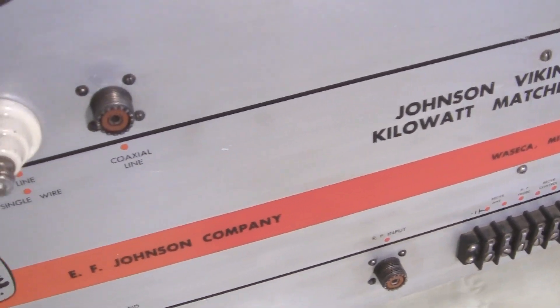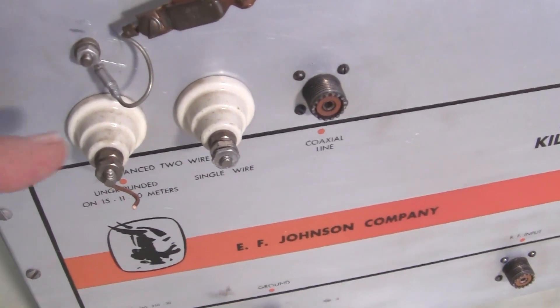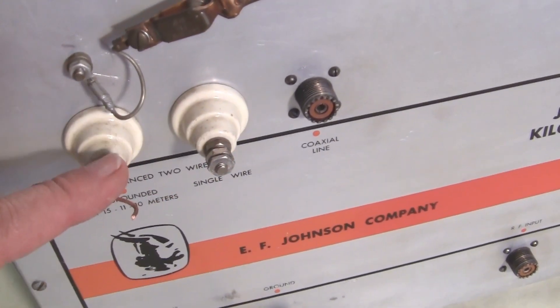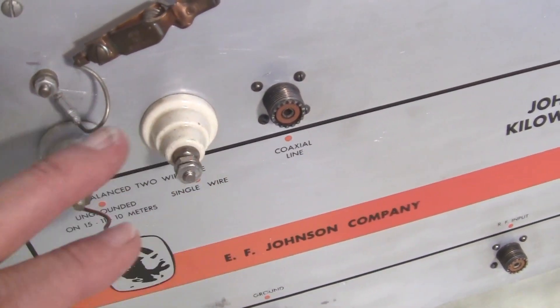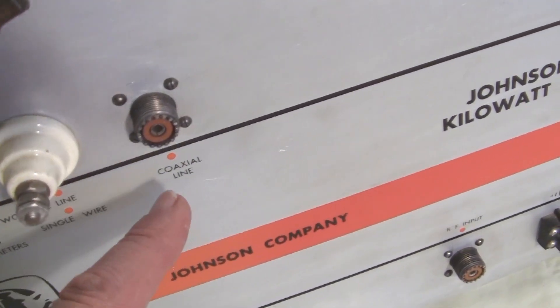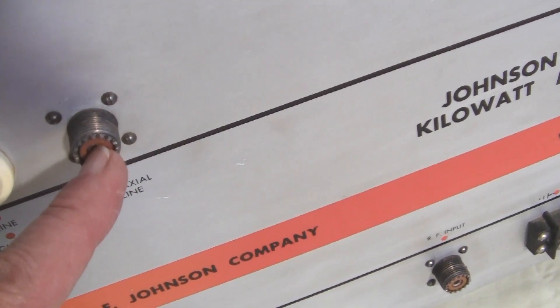Moving on up here to the top, we have the two insulated outputs for the twin lead. And over here is the coax connector for your antenna.